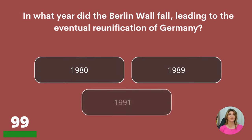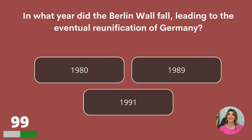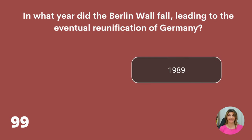In what year did the Berlin Wall fall, leading to the eventual reunification of Germany? 1980, 1989, or 1991? 1989.